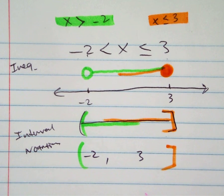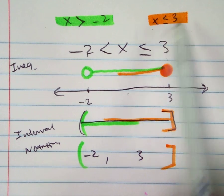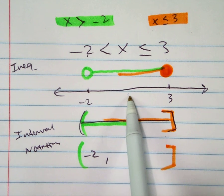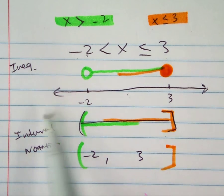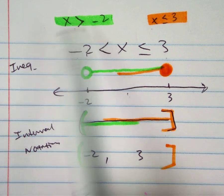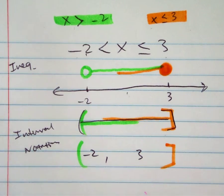How about negative 10? Negative 10 is not bigger than negative 2. But negative 10 is smaller than or equal to 3. So again, you have to meet both of these conditions.